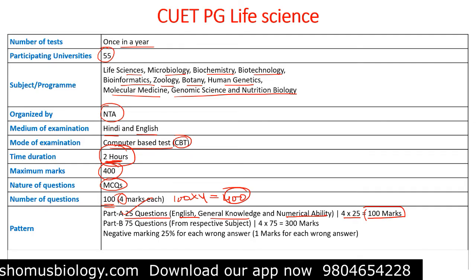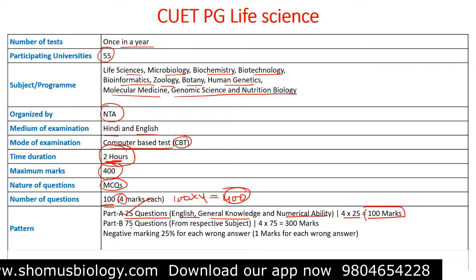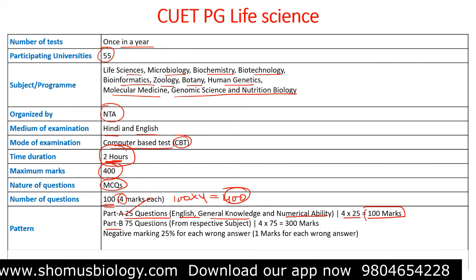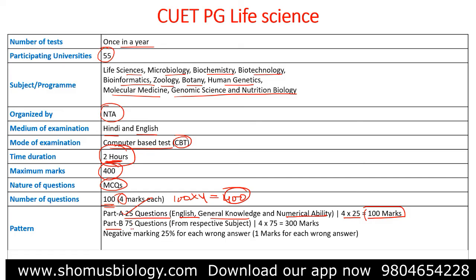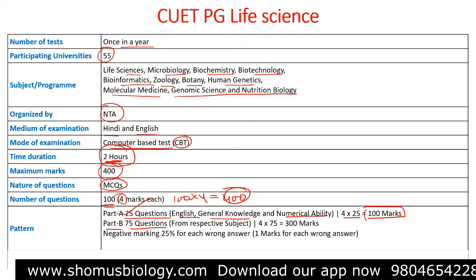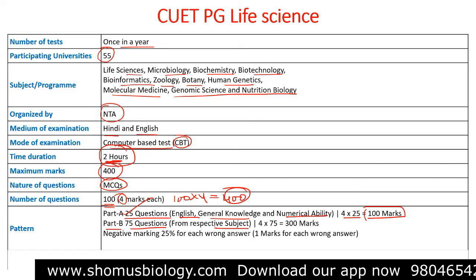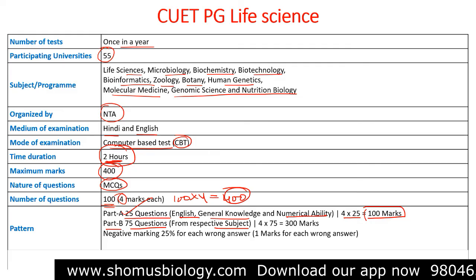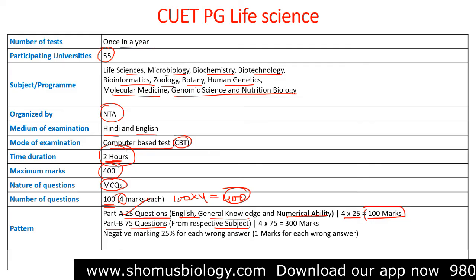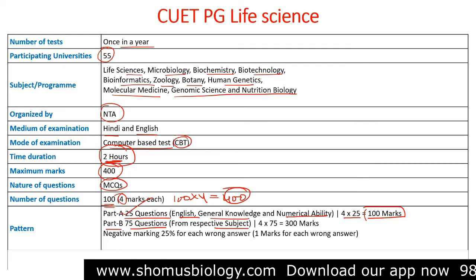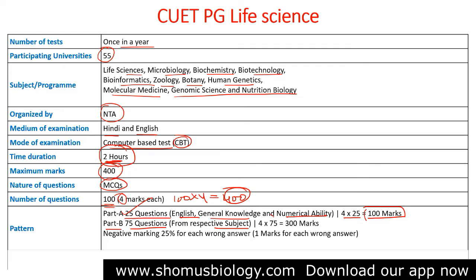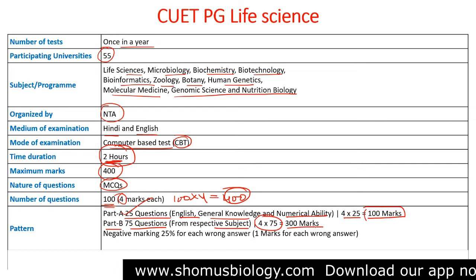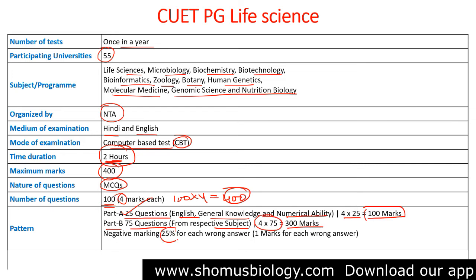Part B consists of 75 questions from the respective subject you are applying for, whether it's life science, microbiology, biochemistry, biotechnology, or bioinformatics. Each question carries 4 marks, so 75 × 4 gives 300 marks for Part B. There is a negative marking of 25% for each wrong answer.